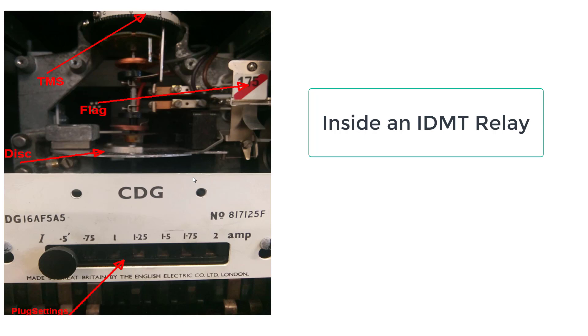Now in this tutorial we will see how to connect an IDMT relay to do measurement and plot the time current characteristics curve from the obtained result.